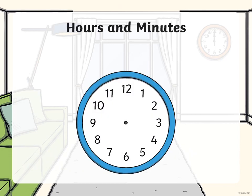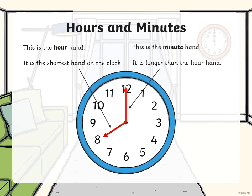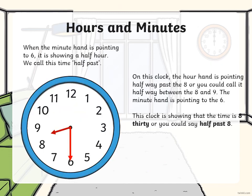Hours and minutes. This is the hour hand — it is the shortest hand on the clock. This is the minute hand — it is longer than the hour hand. When the minute hand is pointing to six, it is showing a half hour. We call this time half past.